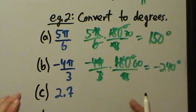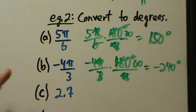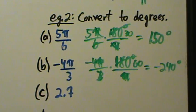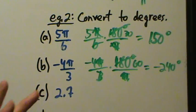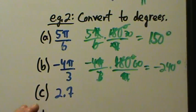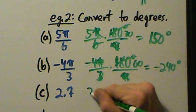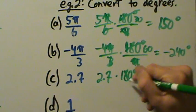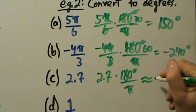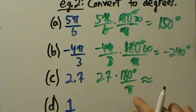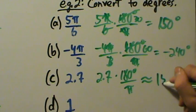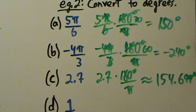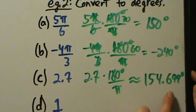Radian measurements don't have to have pi in them — the nicer angles like 5 pi over 6 or negative 4 pi over 3 do, which we'll see later with the unit circle. But radian measurement can be any real number, like 2.7. The process is exactly the same: multiply by 180 over pi. So 2.7 times 180 degrees over pi is approximately equal to 154.699 degrees, since pi is irrational.